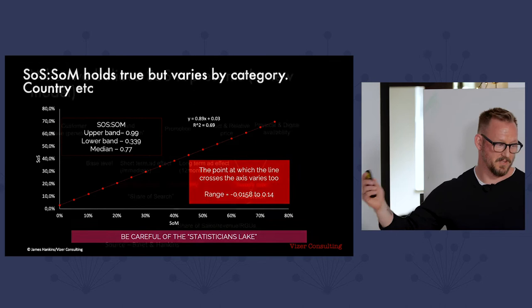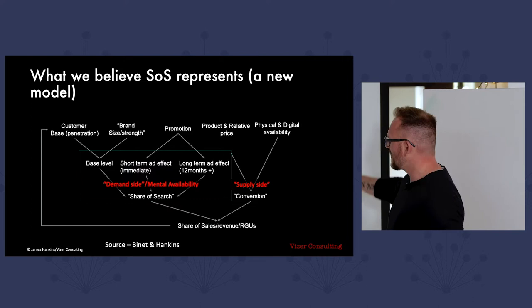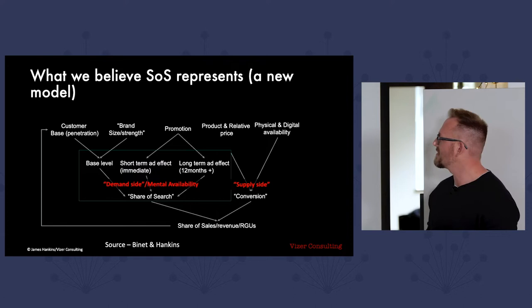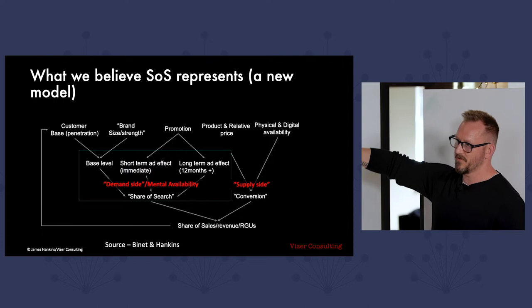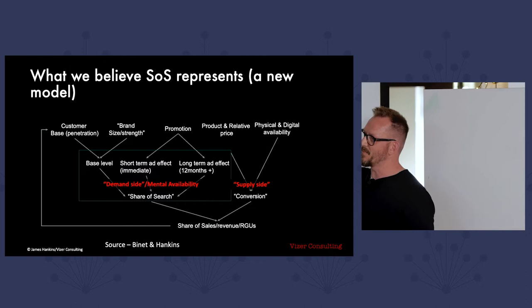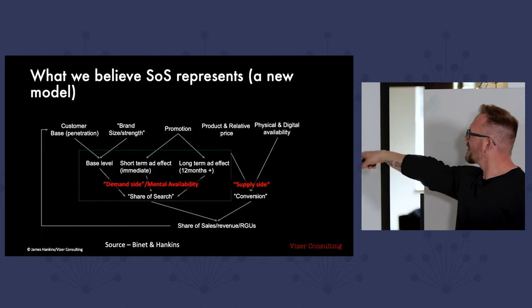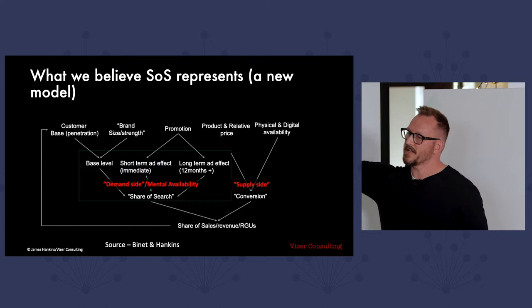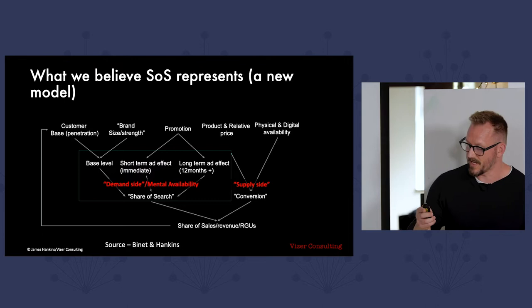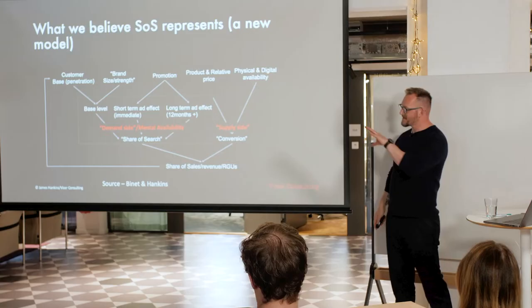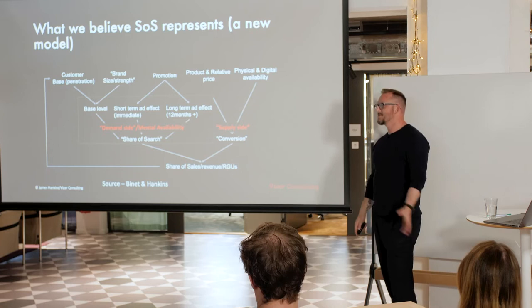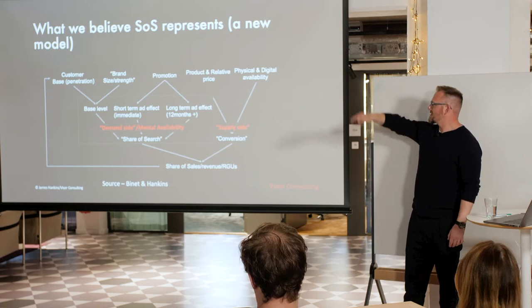Where I talk about supply side and demand side — this is a diagram that Les and I have put together that tries to explain what Share of Search represents. We believe that Share of Search represents mental availability, and actually we've proven that Share of Search correlates ridiculously highly with mental availability. That's why Byron Sharp has suddenly gone quiet on us — he didn't like it to begin with, and now we've proven that it matches one of his greatest ideas. The other side is supply side, which includes price and physical and digital availability. Share of Search is demand side primarily, which is why it doesn't perfectly correlate with market share — it's the majority of market share.